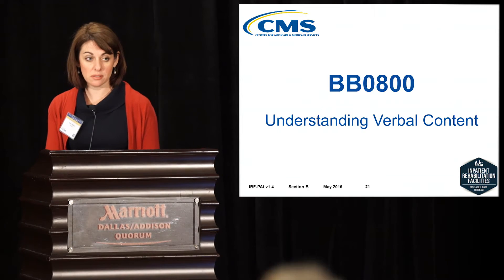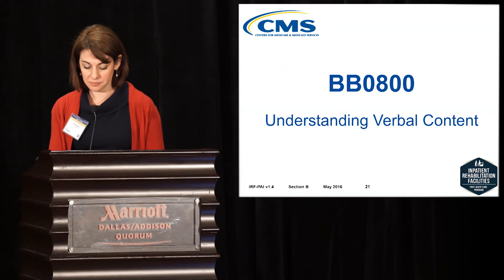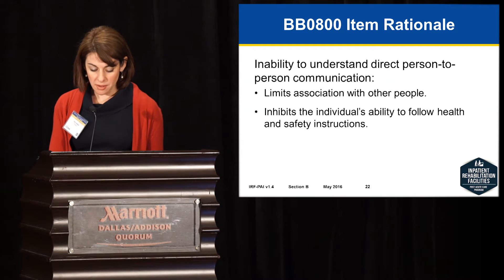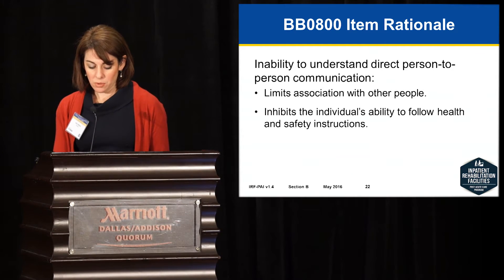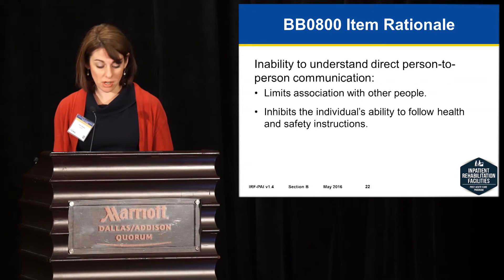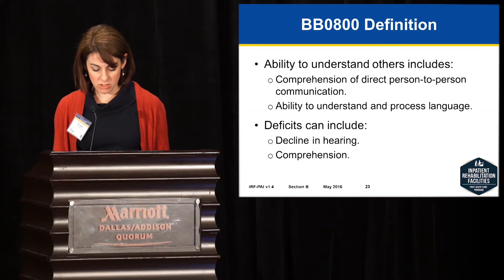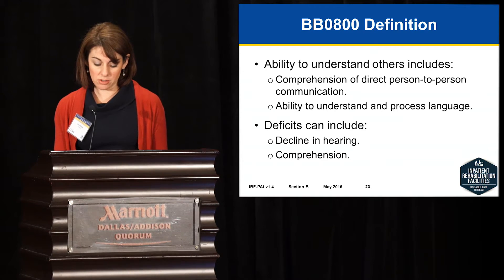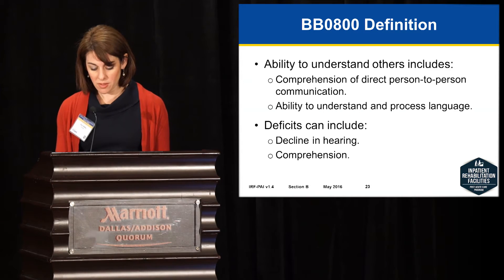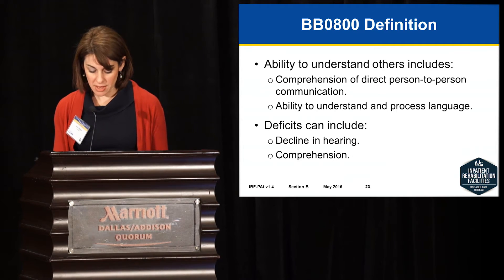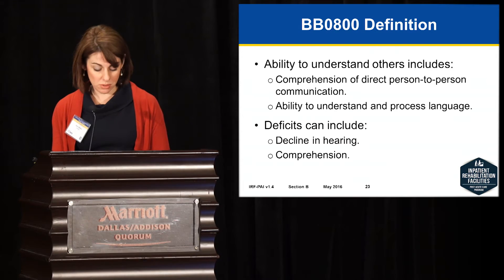Now we move on to BB0800, which is understanding verbal content. Deficits with understanding verbal content can have a significant impact on a person, which may include limiting interactions with other people and reduced ability to follow health and safety instructions. Understanding verbal content is defined as the ability to understand others, including comprehending person-to-person communication and the ability to understand and process language. When a patient has deficits with understanding verbal content, it may be due to reduced hearing or reduced comprehension.